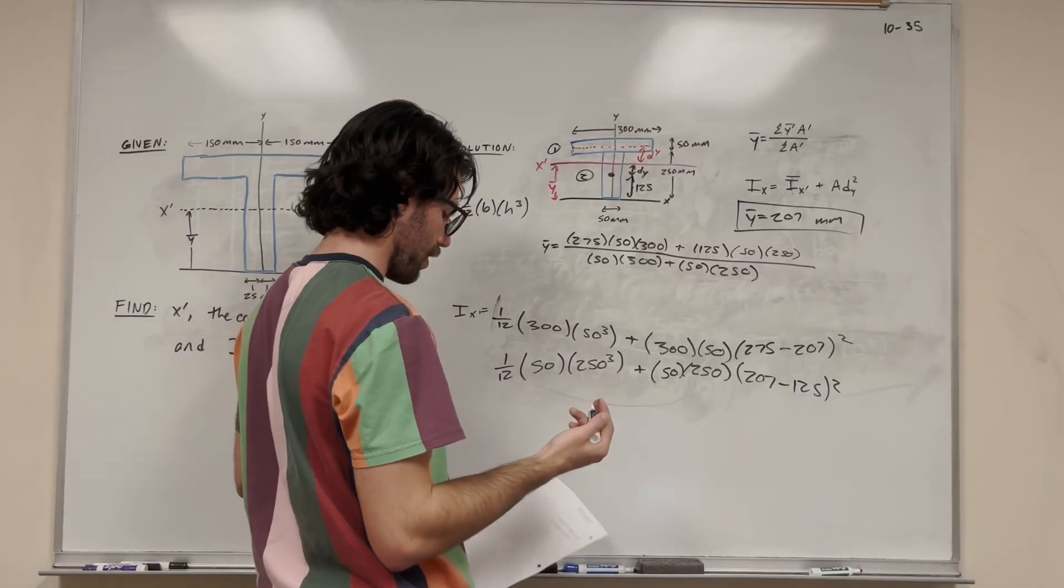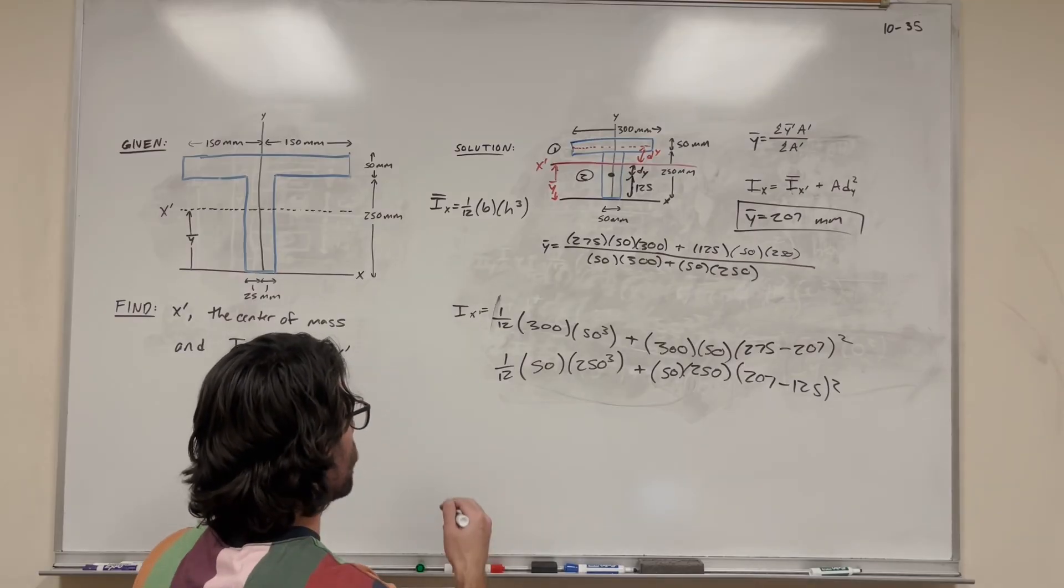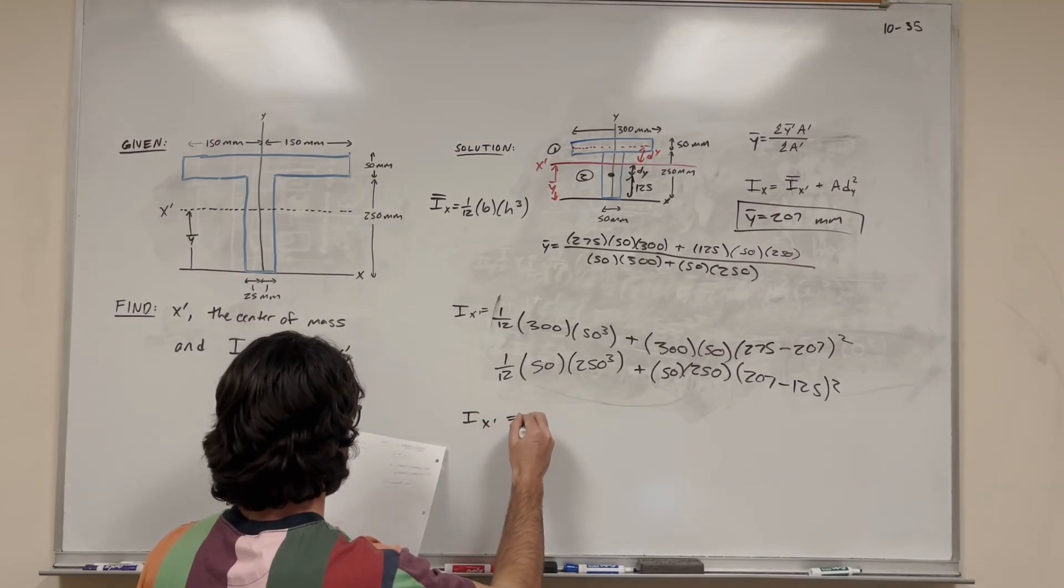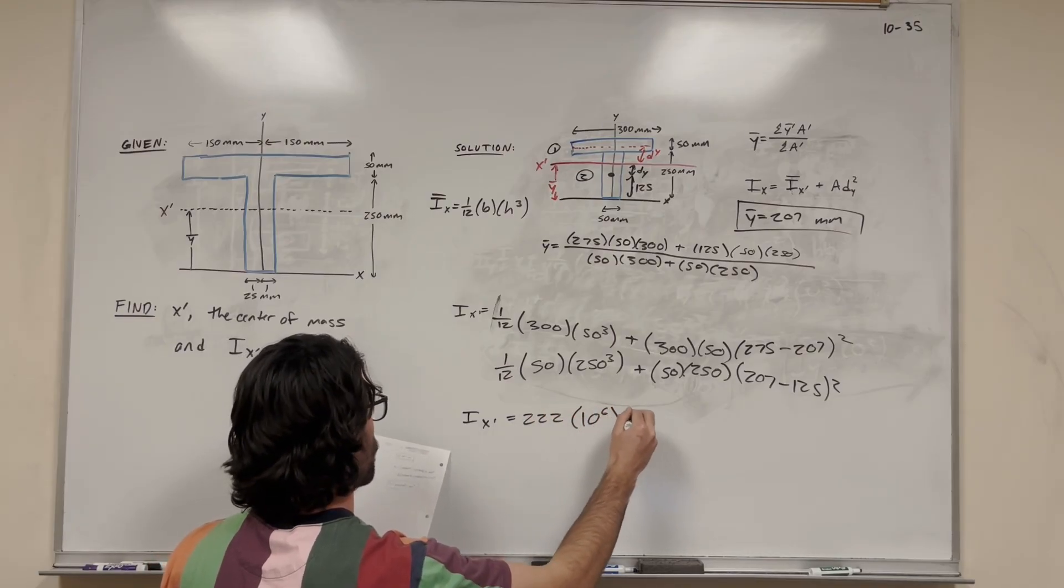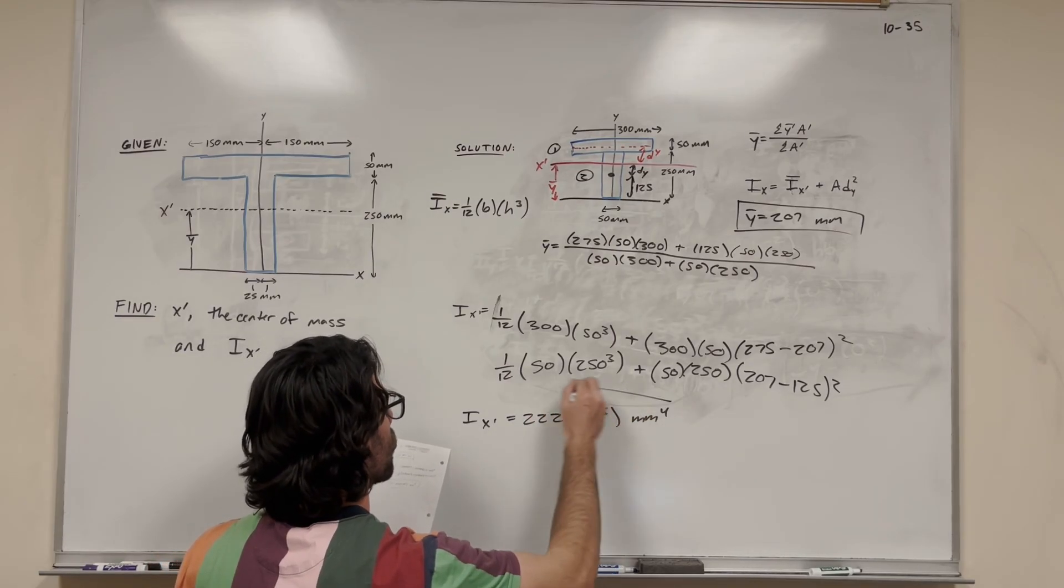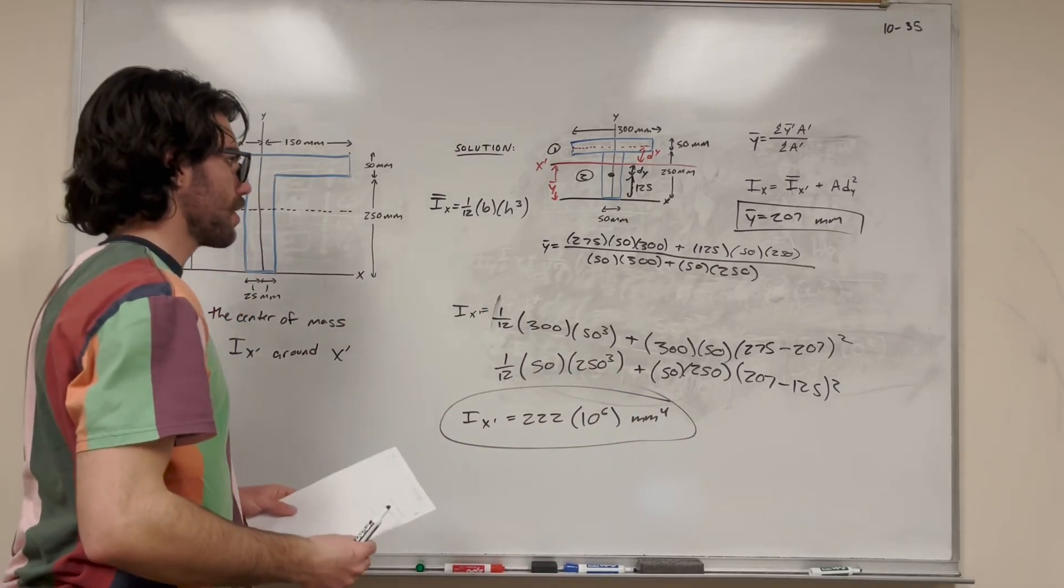So this is our final equation for how to find i bar, or i, the moment of inertia. So ix prime, if you do this, it'll be 222 times 10 to the 6, oh here's to the 4th. And that's our final answer for the moment of inertia around our new central axis.